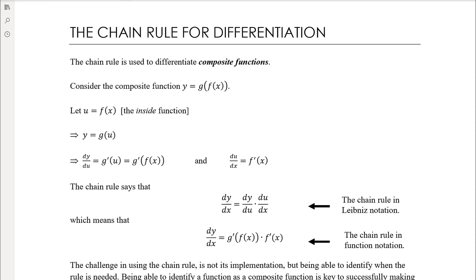In the previous video we had an example where we had something like a fraction squared, and we talked about the fact that we needed to expand that out before we could differentiate it. The alternative would have been to use the chain rule, which is what we're looking at today. If I only had a squared power I wouldn't use the chain rule, but if it was a power of eight I definitely wouldn't be expanding that out, so we need another method.